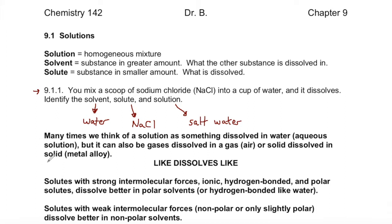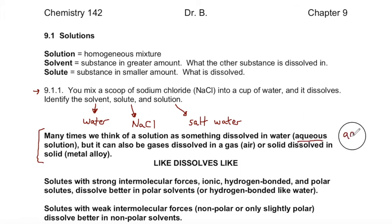A lot of times, especially in the problems in this class, the solution is going to be things dissolved in water. We call this an aqueous solution — we've seen this in our reactions, we call things AQ. But it doesn't have to be something dissolved in water. Air is a solution of gases dissolved in one main component of gas. We've also talked about metal alloys, which are solutions of one metal dissolved inside another while it was molten and then refrozen.